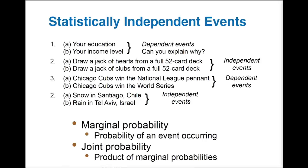Now let's talk about statistically independent events, which is important because we're working toward conditional probability — the likelihood of something happening depending upon something else happening first. We have to distinguish between independent and dependent events. A dependent event is one where conditional probability comes into play, while for an independent event, conditional probability doesn't matter. A statistically independent event is a situation where one thing doesn't affect the outcome of the other.